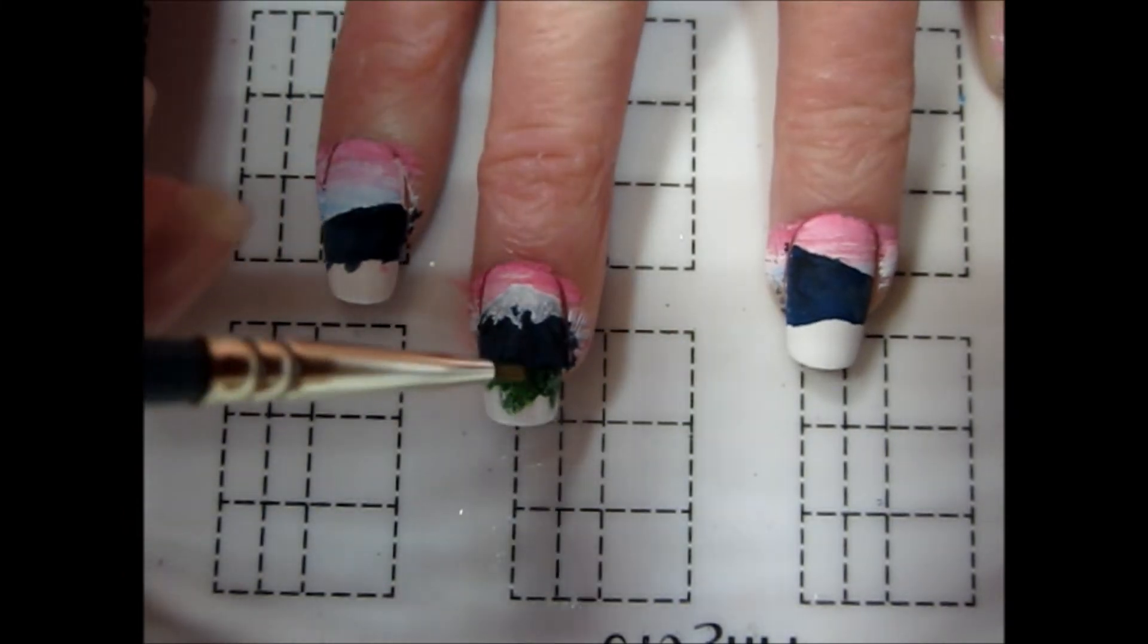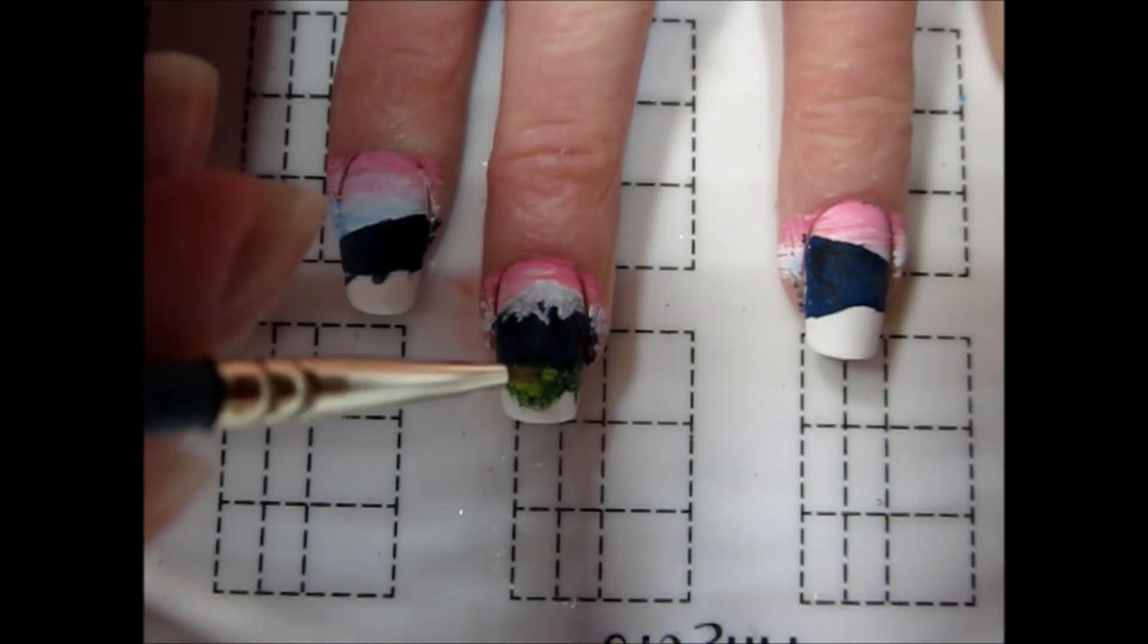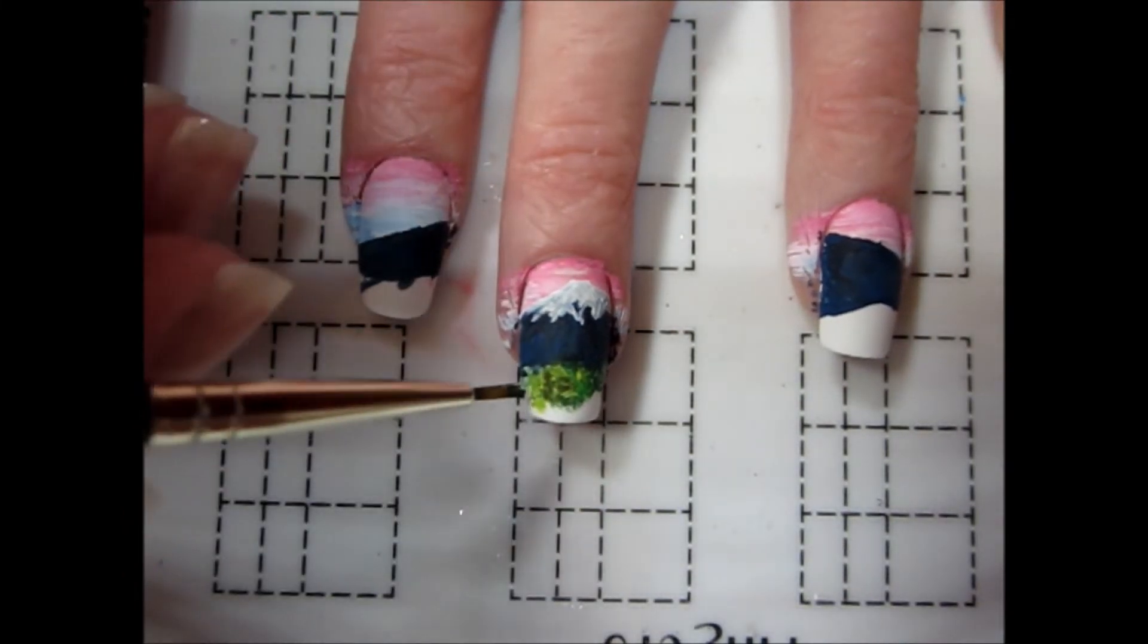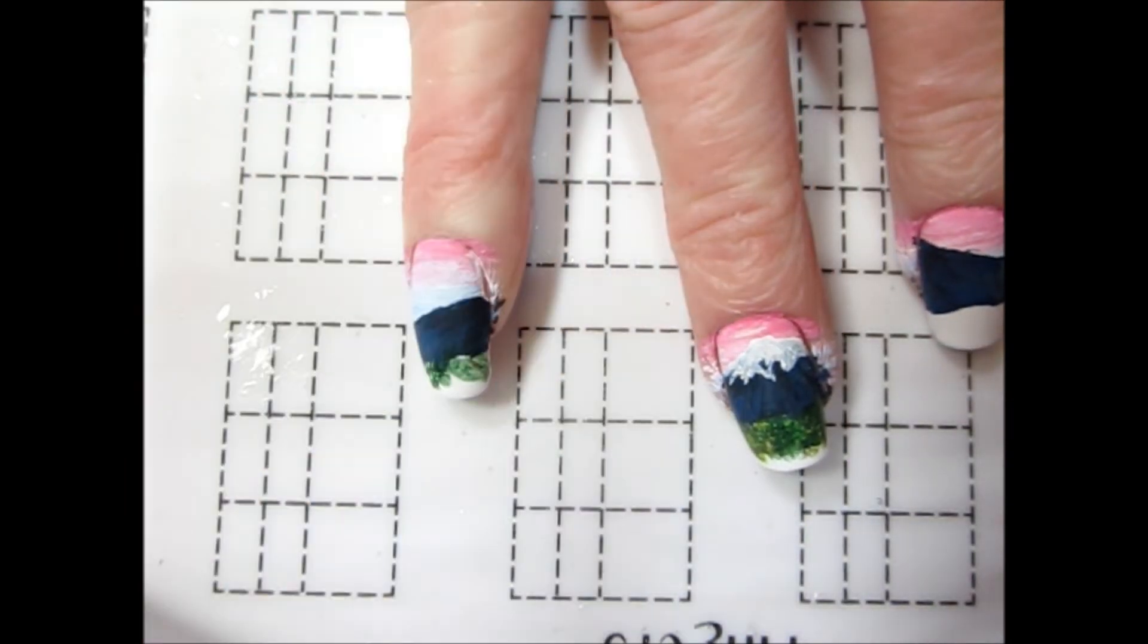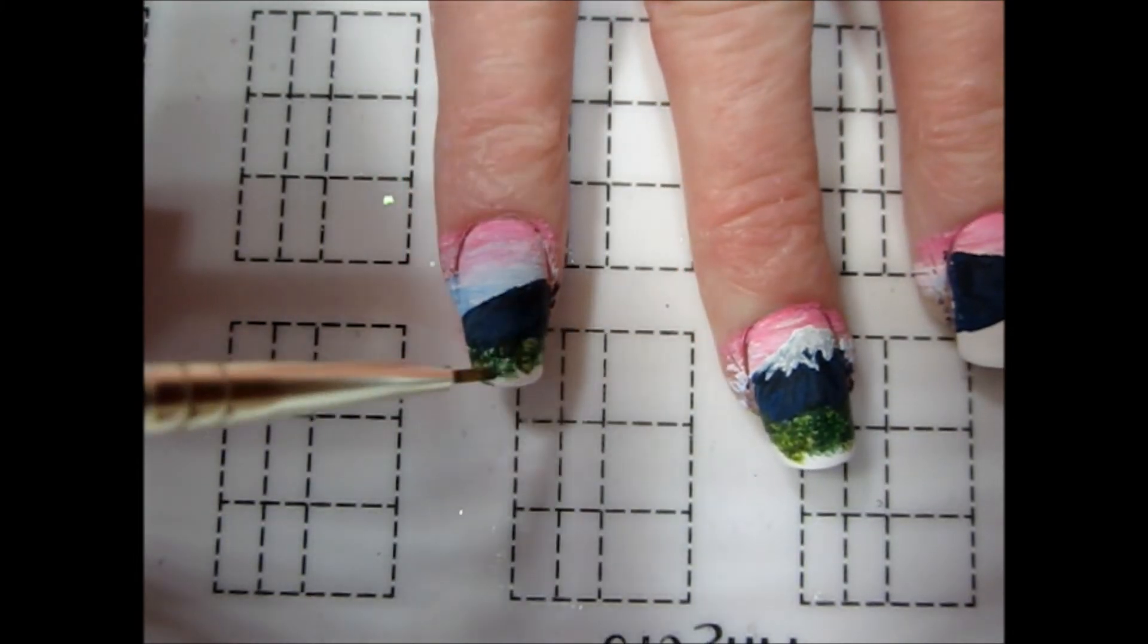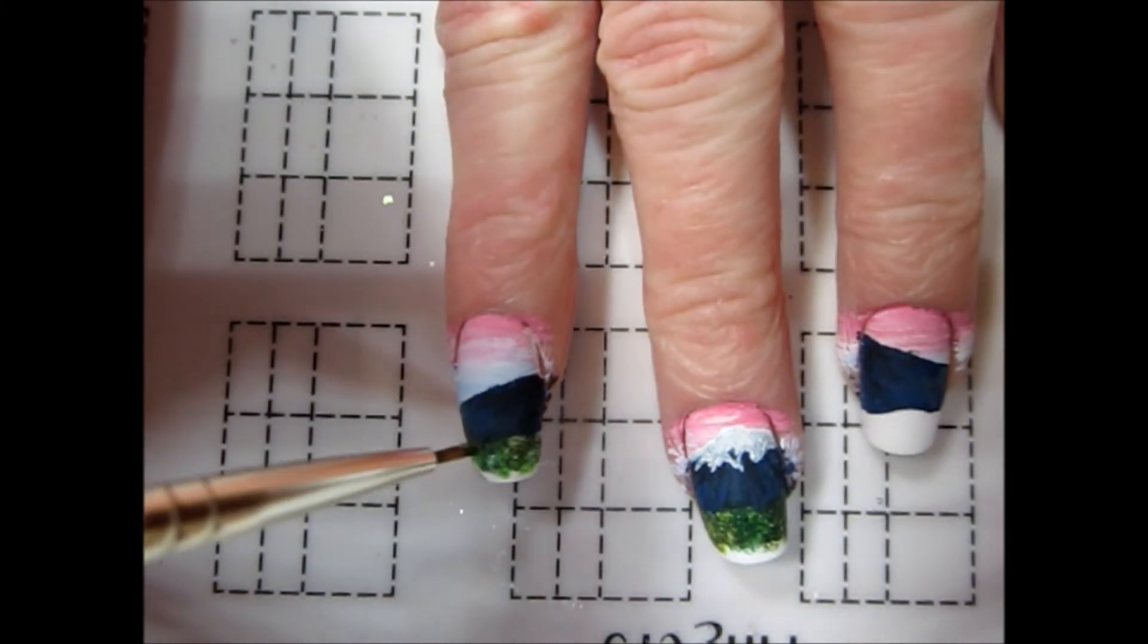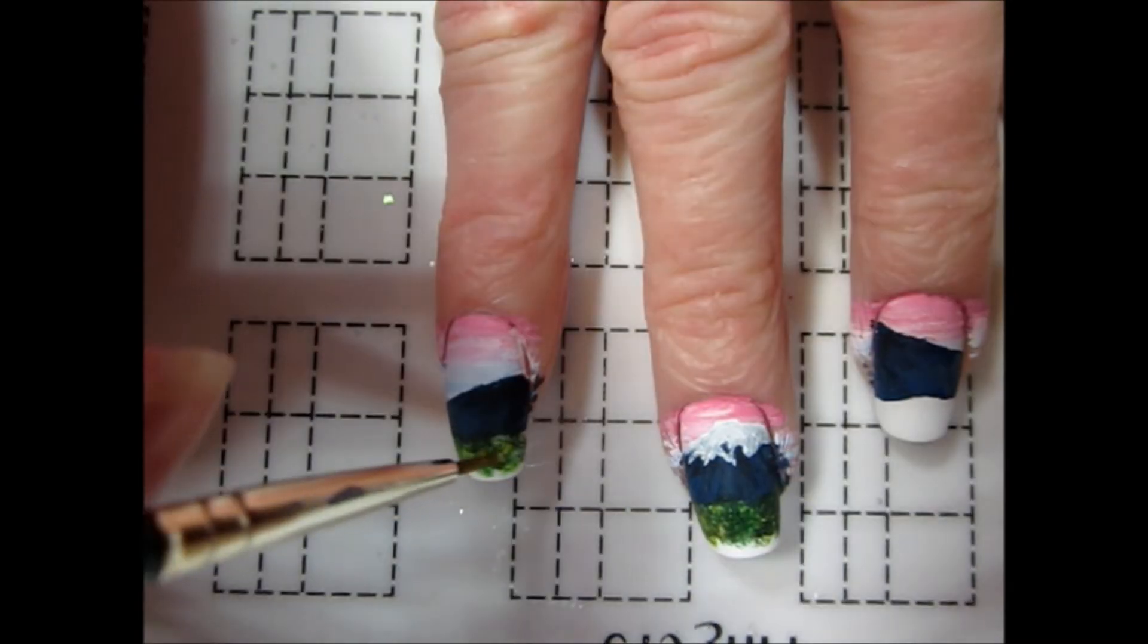I repeated this process with a lighter yellow-green, darker brown-green, and plain yellow and brown to create a field of grass. If you don't have an old brush to spare, you could also use your smallest nail brush to just add a bunch of individual tiny dots with the same color scheme, but the process will take you a lot longer.